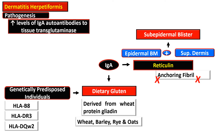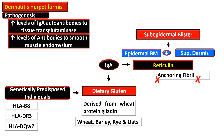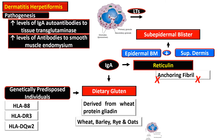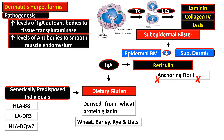This condition is associated with increased levels of IgA antibodies to transglutaminase and also increased levels of antibodies to smooth muscle endomysium. This condition does not fix complement; rather, there is recruitment of neutrophils that secrete leukotrienes, leading to recruitment of more neutrophils. As a result of secretion of lysosomal enzymes, there is degradation of laminin and collagen-4.